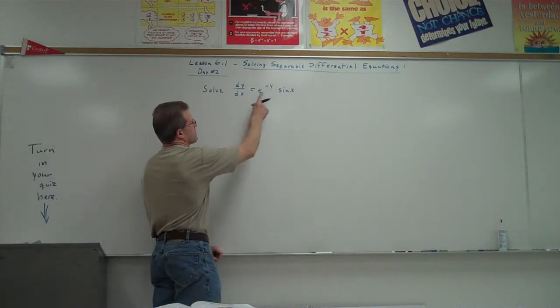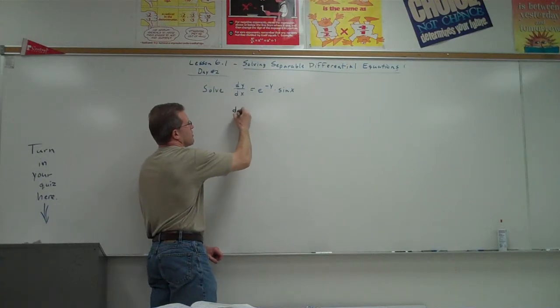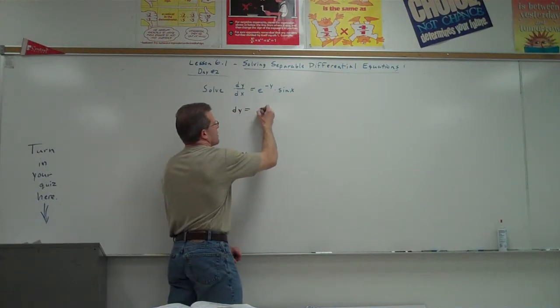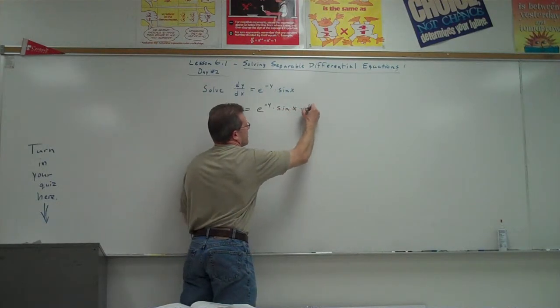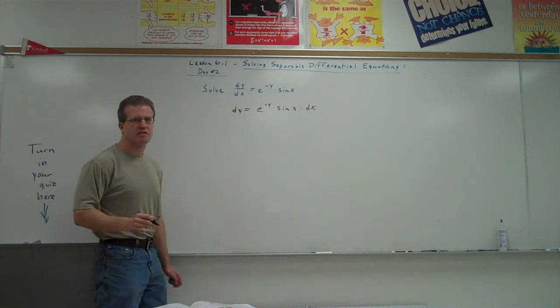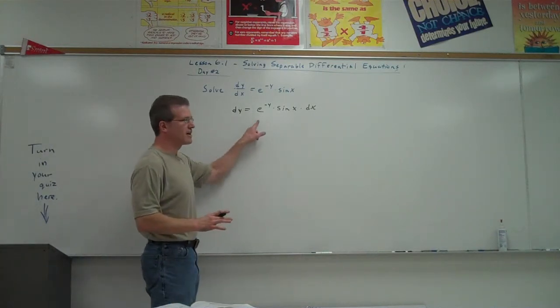So I'm going to start by multiplying by dx on both sides. I multiply by dx on the left, this dx would cancel off, so I just have a dy on the left. Multiply by dx on the right, I'm going to appear over here. So I've got all the x's to the right side of the equation.